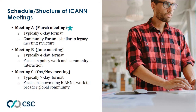In terms of ICANN meetings, there are generally three public meetings that happen every year. The first one of the year is typically in the March timeframe and is normally a six-day format. Because we're still virtual, this was more of a four-day format, with some pre-meetings the week before. This meeting is known as the community forum — a smattering of everything: workgroup meetings, high-interest topics, and discussion around what we're trying to get done.